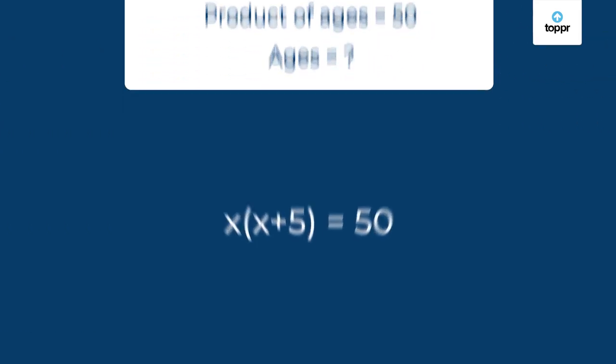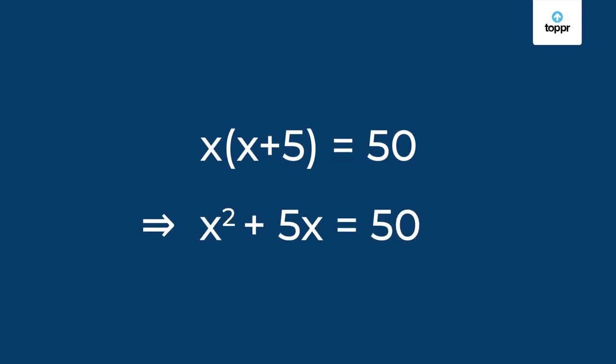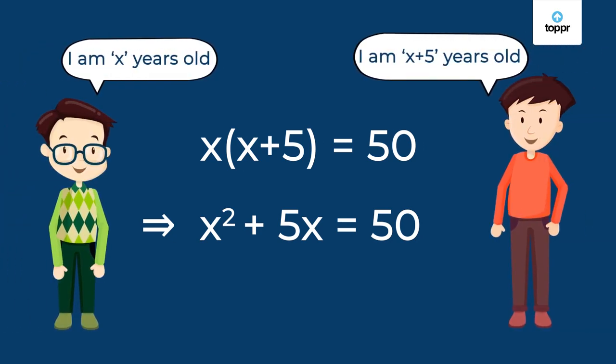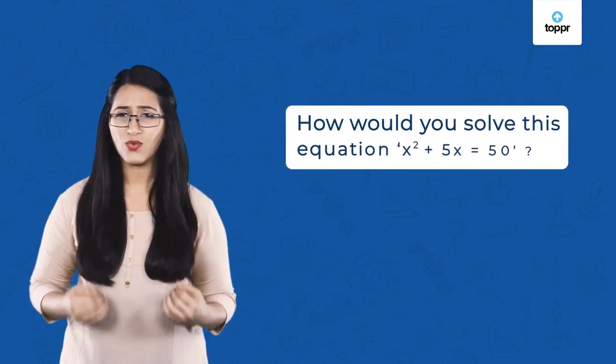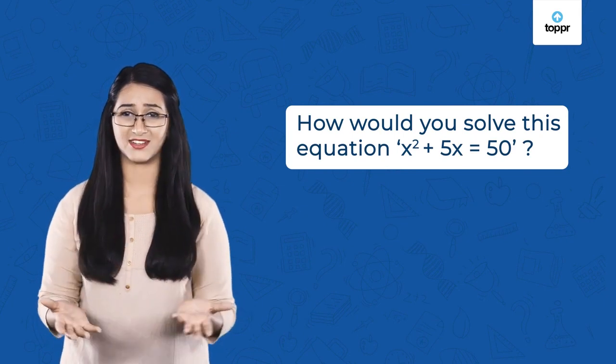If we simplify this equation, we get X² + 5X = 50. So, just by solving this equation, we can find the value of X and know the ages of Jai and Viru. But here's the question — how would you solve this equation? It looks difficult, right?